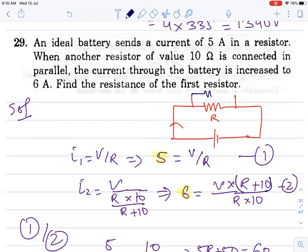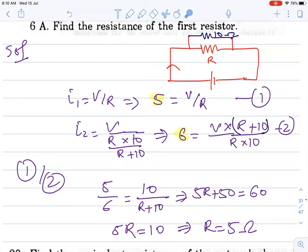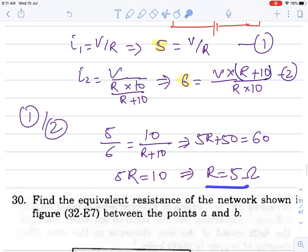Then another resistance of 10 ohms is connected in parallel. What happens? Current is 6 amperes. These two in parallel: net combination = R₁R₂/(R₁ + R₂). i₂ current from battery is 6. Resistance is less in parallel. Let's write the equation: R_net. Let's divide equations 1 and 2: 5/6 = (V/R)/(V/R_net). V/R cancels. This is 10/(R + 10). Cross multiply and solve: R = 5 ohms.